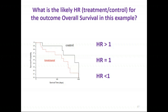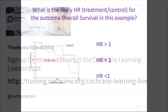Comparing treatment to control, that translates to a hazard ratio greater than one. It's really important when interpreting hazard ratios and Kaplan-Meier curves to make sure you understand the direction of how the hazard ratio has been calculated and how that relates to the prognosis displayed in the Kaplan-Meier curve.